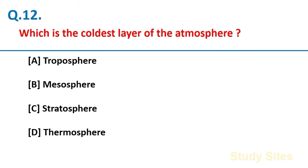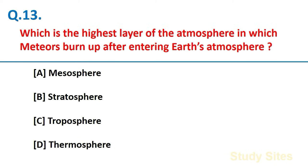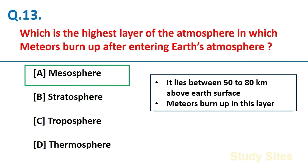Which is the coldest layer of the atmosphere? Mesosphere. And thermosphere is the warmest layer of the atmosphere. Which is the highest layer of the atmosphere in which meteors burn up after entering earth atmosphere? Mesosphere. Mesosphere lies between 50 to 80 km above earth surface and meteors burn up in this layer.